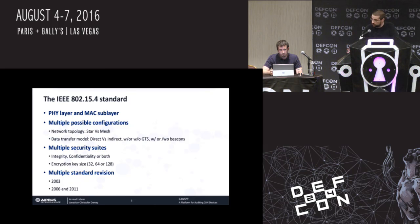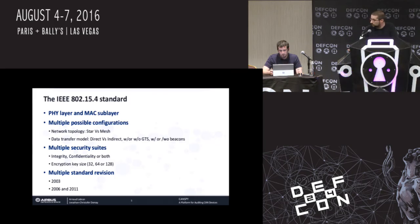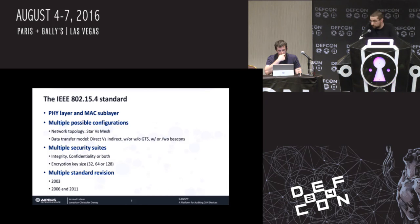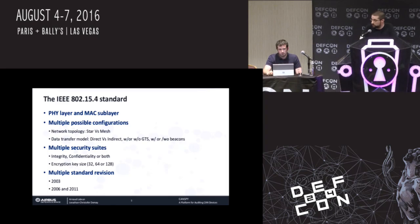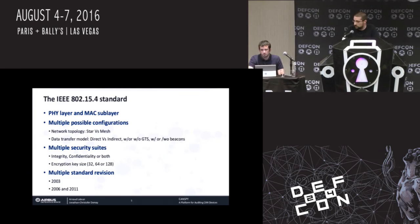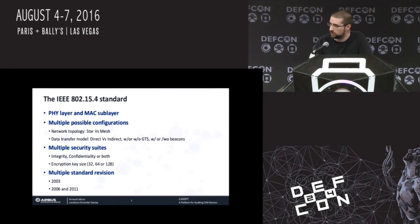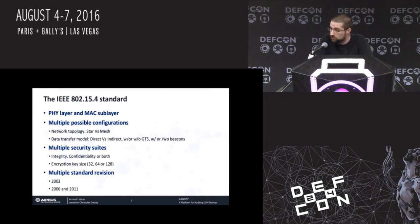But that's not all — you also have to think about security. Encryption and security are provided by the MAC layer, and there again you have multiple choices. You can only protect integrity, you can only protect confidentiality, or you can protect both. You can choose different key sizes: 32, 64, or 128 bits. And of course you have multiple revisions of the standard. The 2003 standard specifies a type of encryption which is incompatible with the encryption specified by the 2006 standard. The 2006 standard uses the same encryption as the 2011 standard, but the key management system is a little bit different. So again, many more combinations are possible.